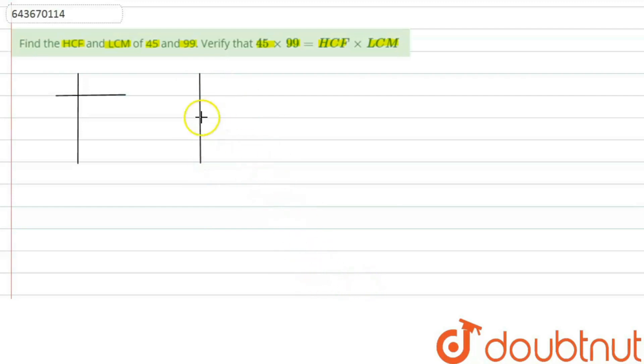Here we have 45 and 99. Now the smallest factor which divides 45 is 3. 3 ones are 3, 3 fives are 15, so 45 is divisible by 3 and we get 15 as quotient.